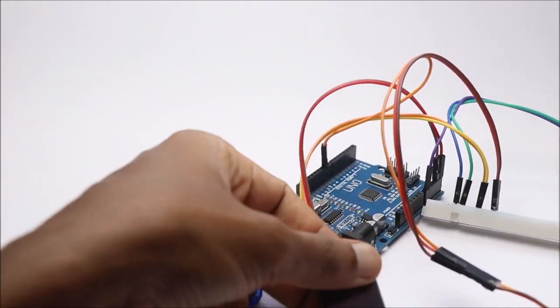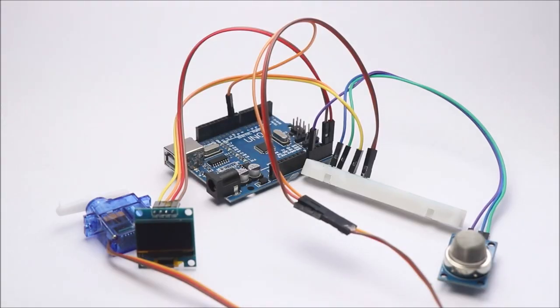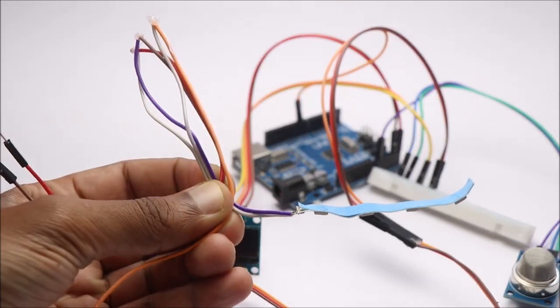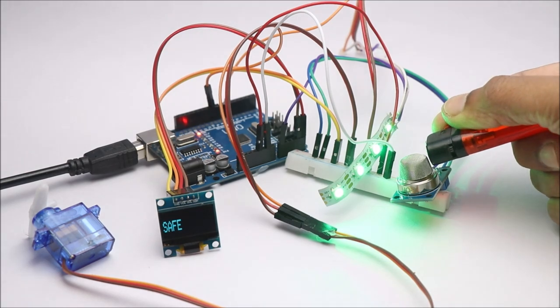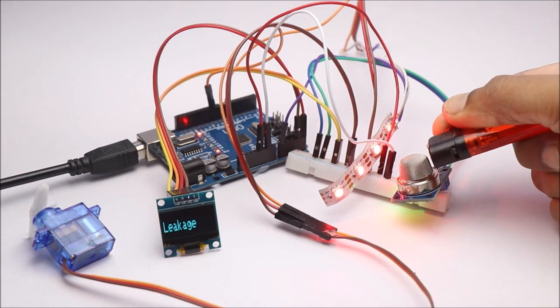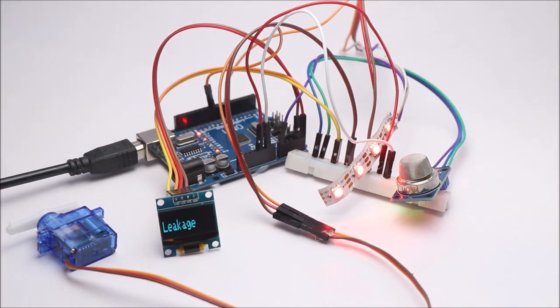After you build all the circuit connections you can test the circuit. Connect Uno to any USB power source. By default the LED will glow green and OLED will display as safe.